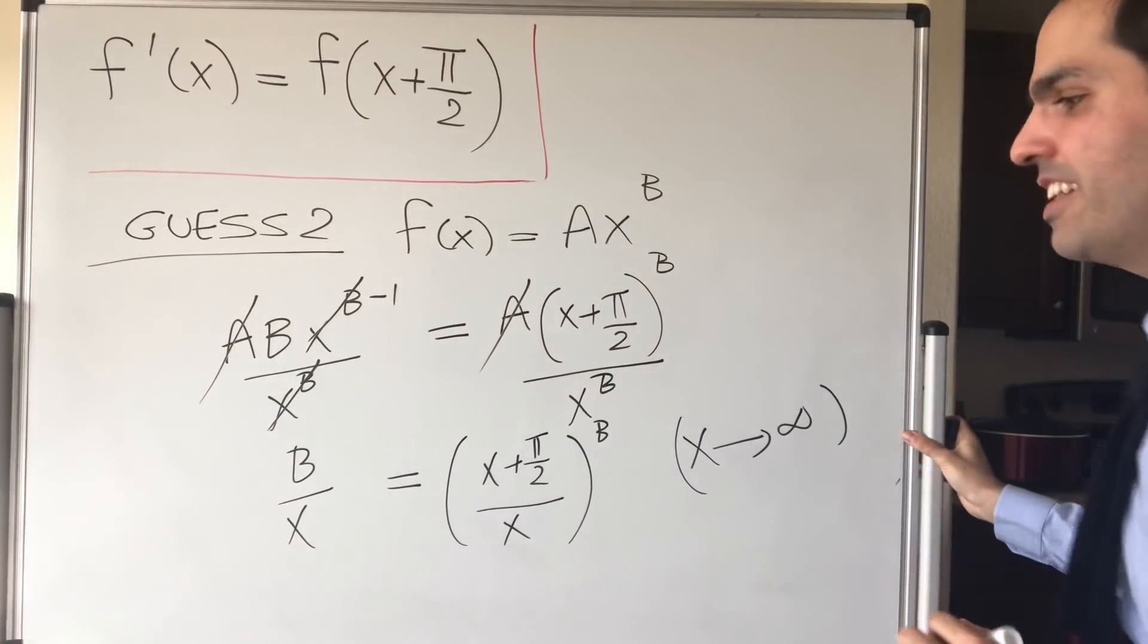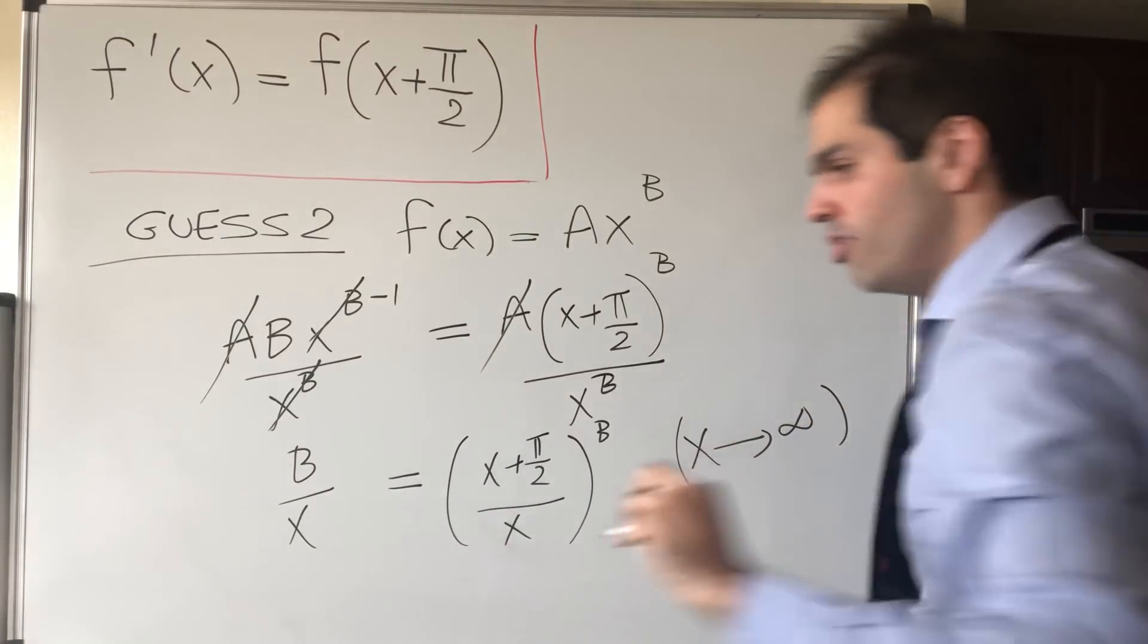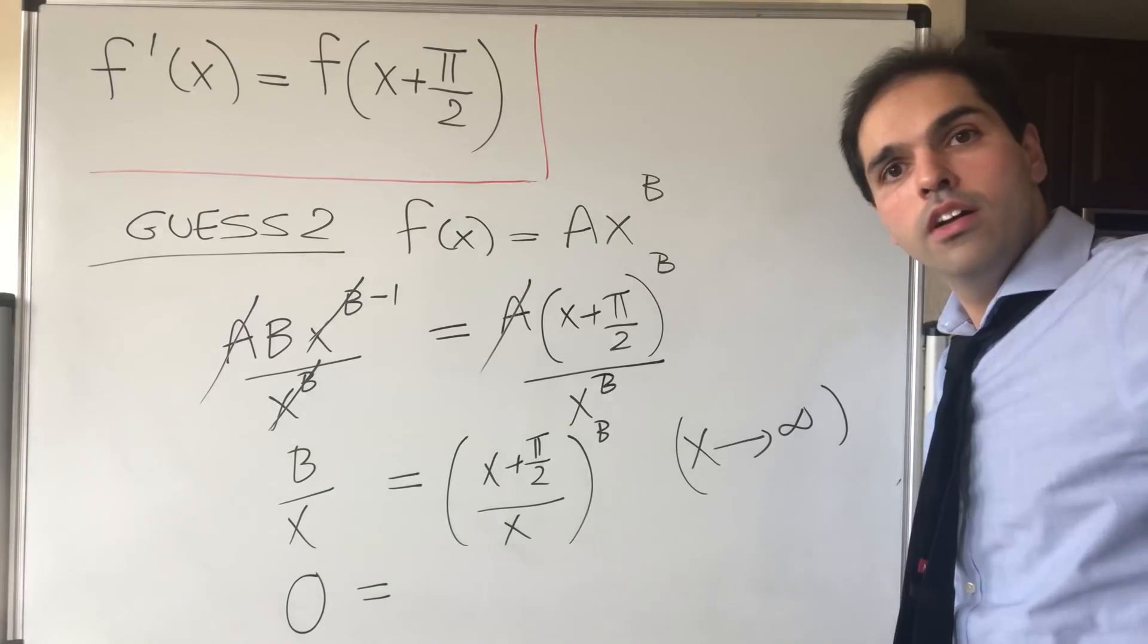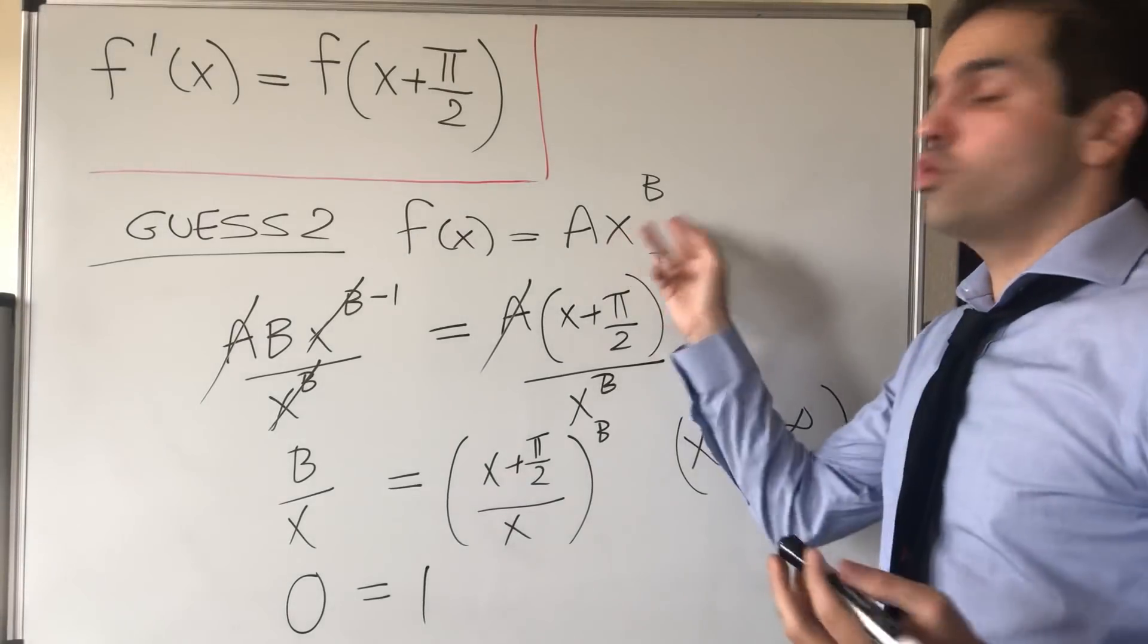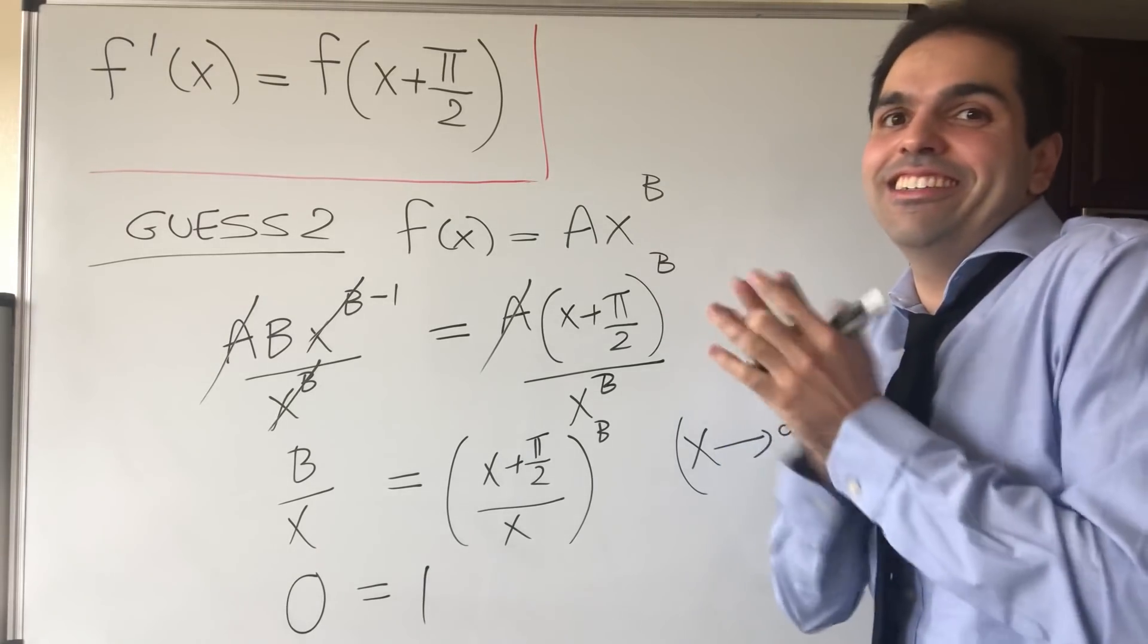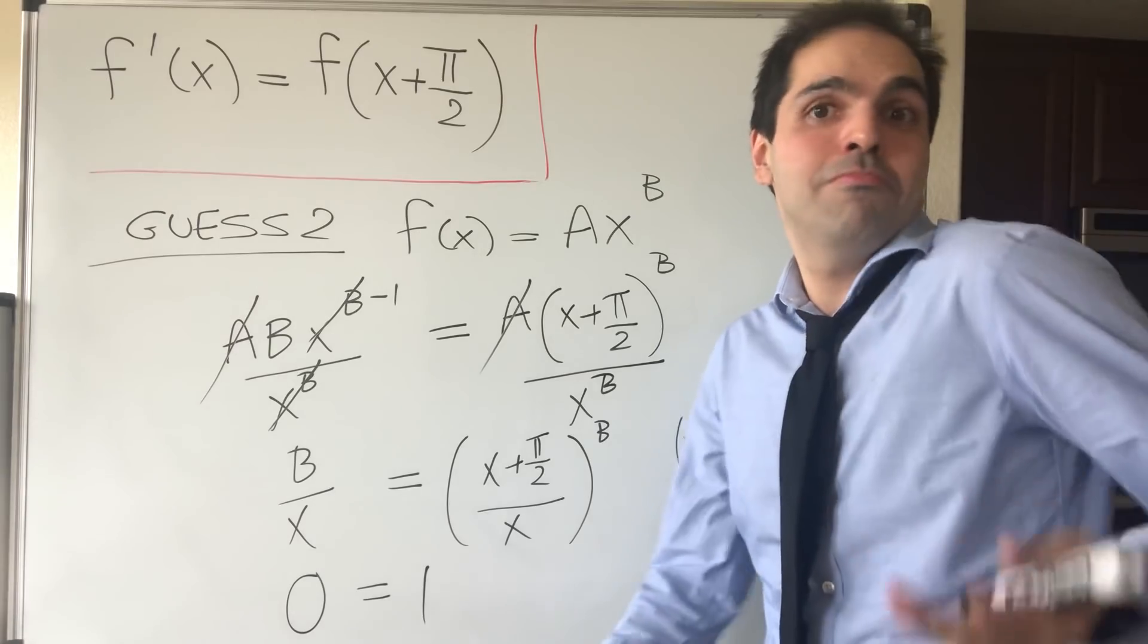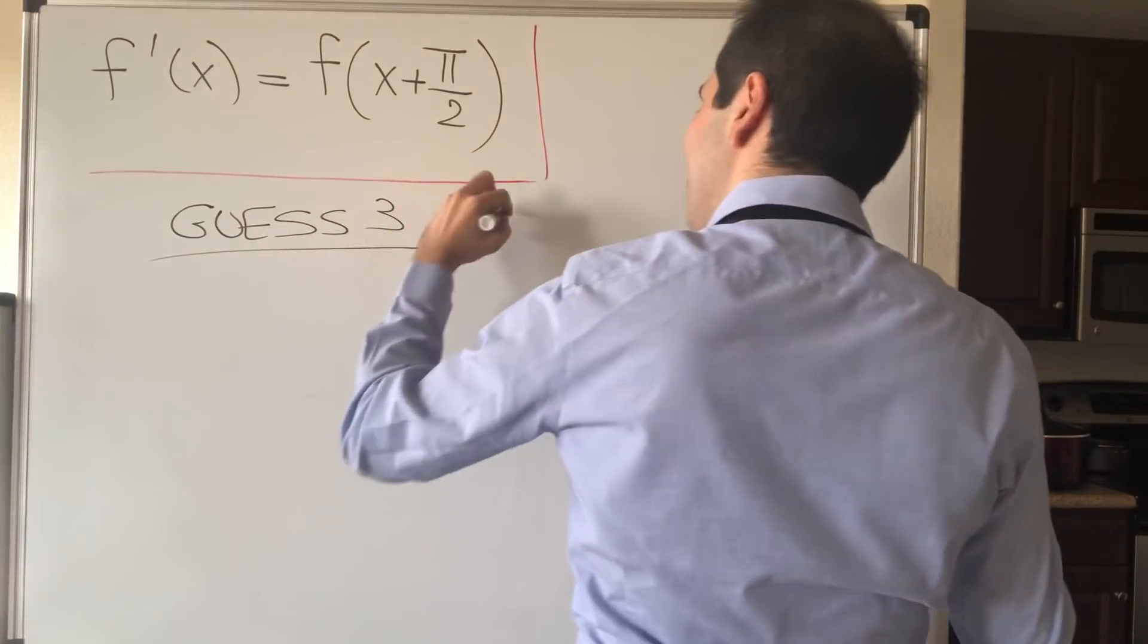And we'll find a contradiction, because on the one hand this goes to zero. So B over infinity is zero, no matter what B is. But this thing goes to one. So then one to a finite number is always one. So then we get zero equals one, which means that there's no solution of this form. And now you're like, oh my god, what should we do now? Okay, I'm almost giving up, but why not? Let's just try out sine or cosine, just to see what's up.